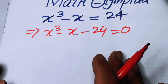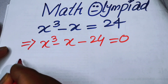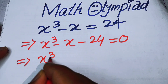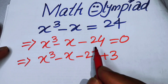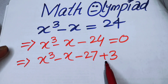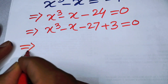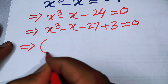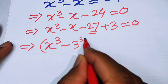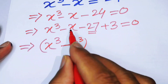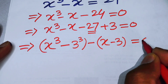After that, we write minus 24 as minus 27 plus 3, so we have x cubed minus x minus 27 plus 3 is equal to 0. Then we rearrange the terms, grouping x cubed and minus 27, writing minus 27 as negative 3 cubed. We also group minus x plus 3, and taking out a common factor of minus 1 from those two terms gives us x minus 3.